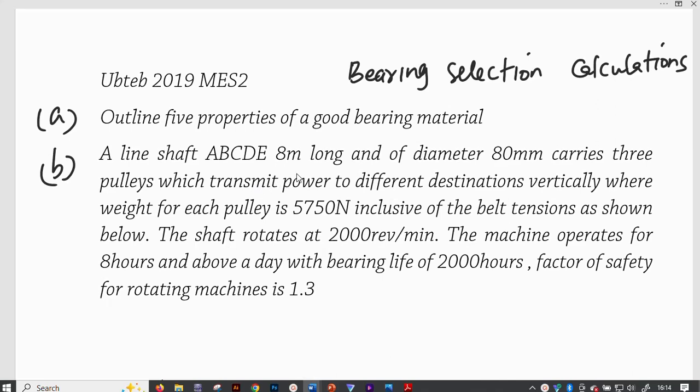Part B says a line shaft ABCDE 8 meters long and of diameter 80 millimeters carries three pulleys which transmit power to different destinations vertically where weight for each pulley is 5,750 newtons inclusive of the bearing tensions as shown below. The shaft rotates at 2,000 revolutions per minute and the machine operates for 8 hours and above the day with a bearing life of 2,000 hours.